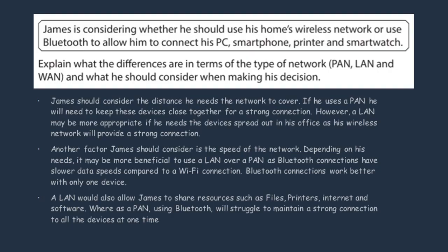The last thing you could talk about is that he might need to use his network to save and share files in a central location. A local area network would let him share resources like files, printers, the internet, and some software. Whereas a PAN using Bluetooth will struggle to maintain a connection with different devices at the same time. This question is only six marks so you really don't need to write too much.